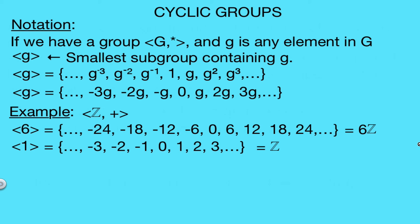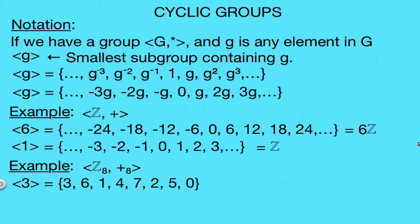In this next example we have the set of integers modulo 8 with addition modulo 8. Taking the element 3, we write the cyclic subgroup generated by 3 by repeatedly adding 3 modulo 8: 3, 3+3=6, 6+3=9 which is 1 mod 8, 1+3=4, 4+3=7, 7+3=10 which is 2 mod 8, 2+3=5, and 5+3=0 mod 8. This is actually our entire set of integers modulo 8, so 3 is a generator and the group is cyclic.